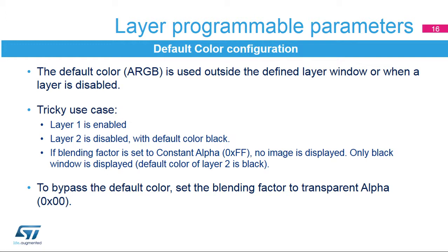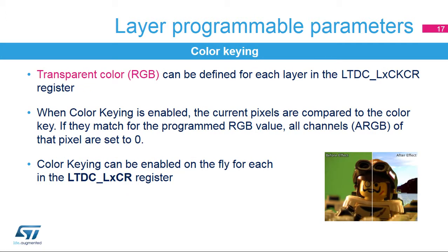A color key RGB can be configured to represent a transparent pixel. If color keying is enabled, the current pixels — after format conversion and before blending — are compared to the color key. If they match the programmed RGB value, all channels ARGB of that pixel are set to 0. The color key value can be configured and used at runtime, and color keying is enabled through the LTDC_LXCKCR register.